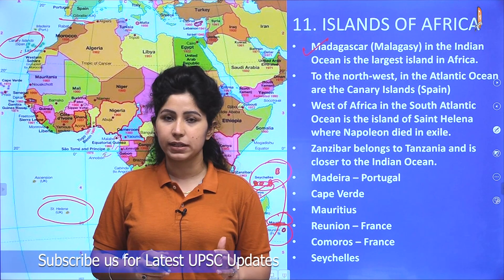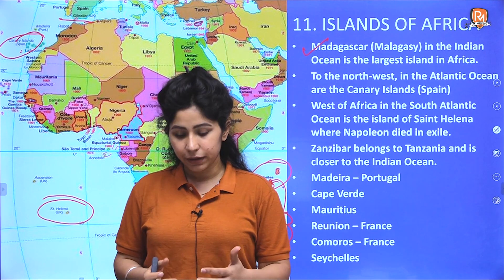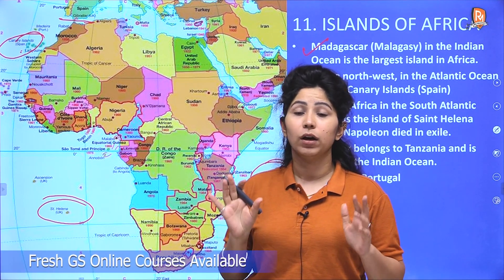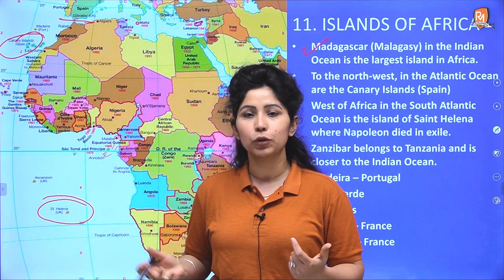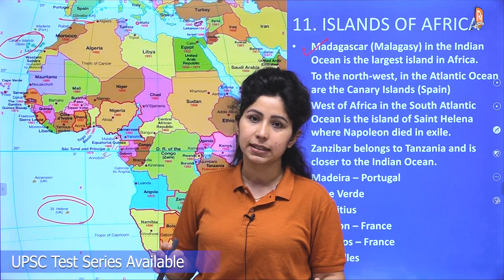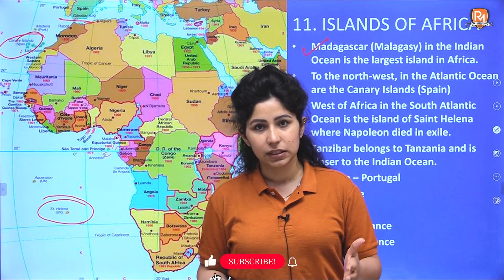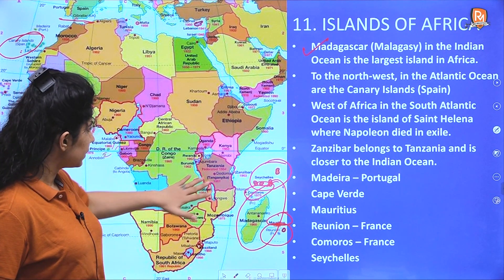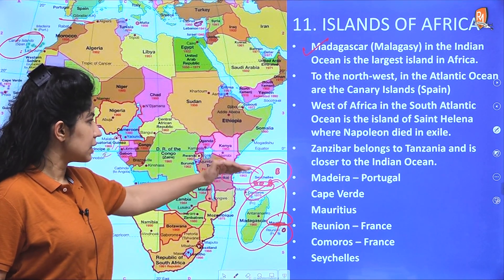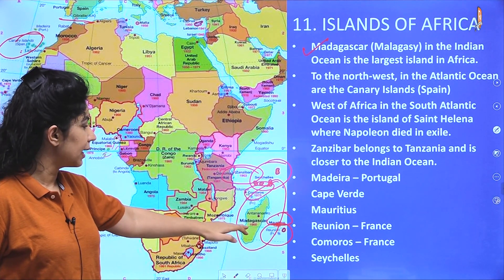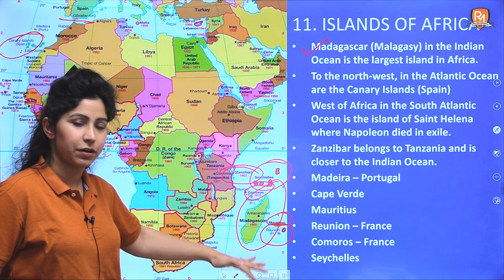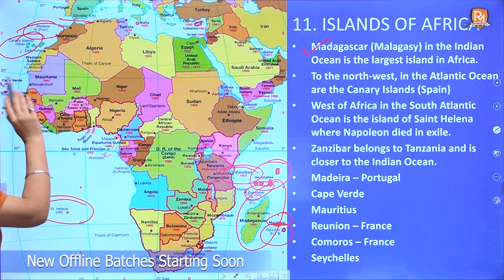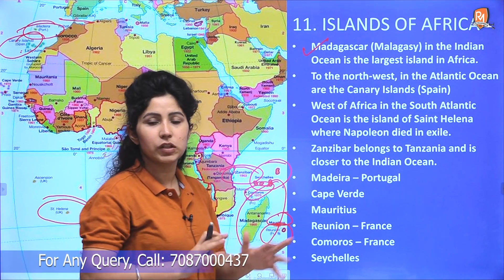You can download the PDF of this presentation from the link in the description below — the link will take you to our Telegram channel. After downloading, just zoom in on the map and see for yourself what all important things you can learn. Cramming a map won't help; you will have to go through an Atlas again and again. Zanzibar belongs to Tanzania and is closer to the Indian Ocean. From north to south, the order is: Zanzibar, Seychelles, Comoros, Madagascar, Mauritius, and Reunion Island belonging to France. Madeira belongs to Portugal and is located near Africa.